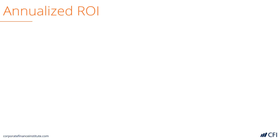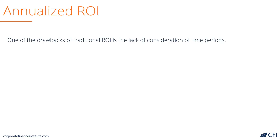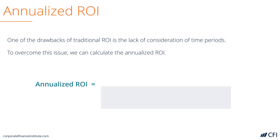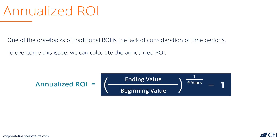Now let's look at annualized ROI. One of the drawbacks, as you saw in the previous example, was that the investor held a property for two years and got an ROI of 40%, but we often like to think of return in annual figures. So we can calculate an annualized return on investment.